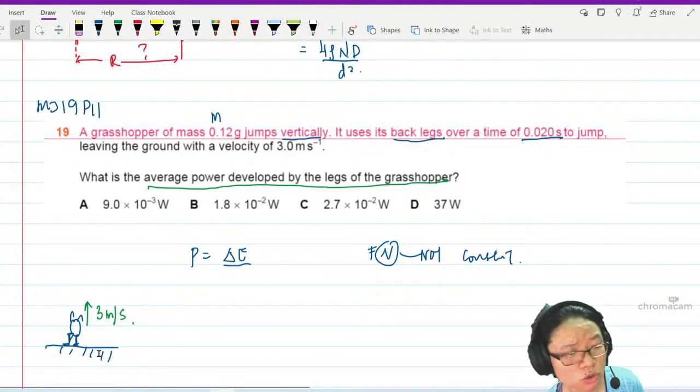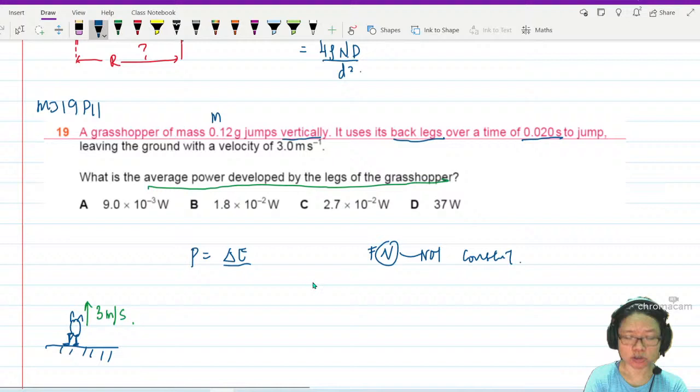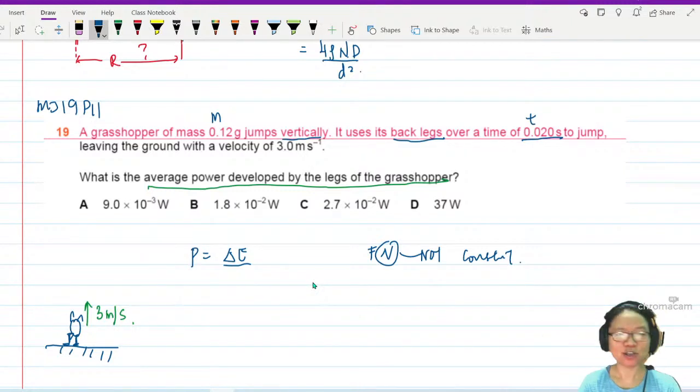I don't care what magical grasshopper you are - you leave the ground at 3 meters per second, gravity will say your speed is going to decrease. So he bends his leg and lifts off in 0.020 seconds. Change in energy over time - not constant, cannot use. T = FV, not constant, cannot use. P = change in energy over time, can use.